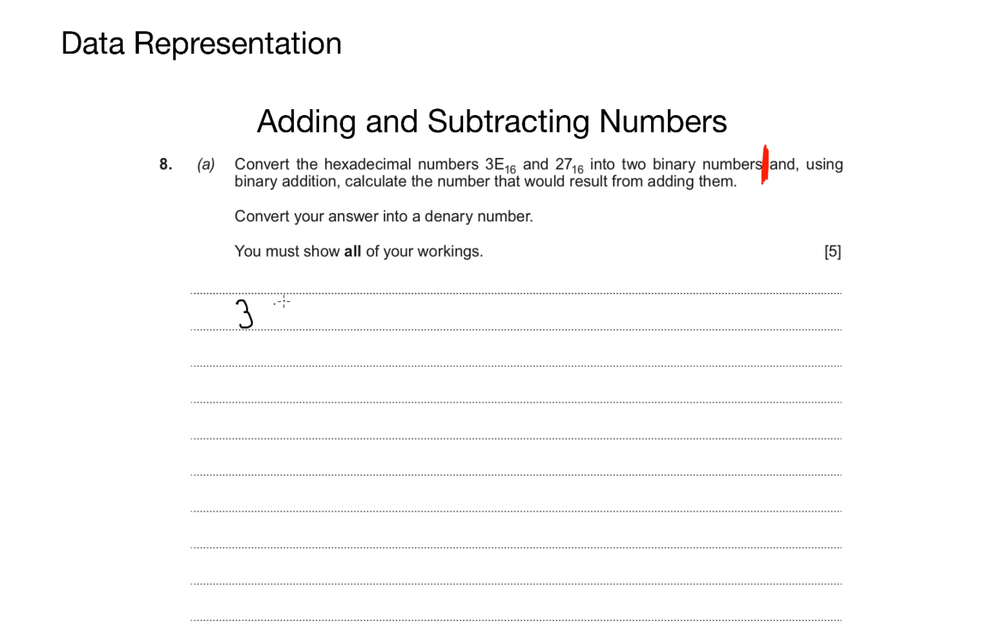This question is worth 5 marks, and the first thing I would do is break the hexadecimal down into its binary numbers. I take 3E and turn the nibbles into an 8-bit binary number: 00111110. And for 27, it would give me 00100111. I combine the 2 nibbles of each hexadecimal number into a byte, and I place them on top of each other, ready for my binary addition to take place.